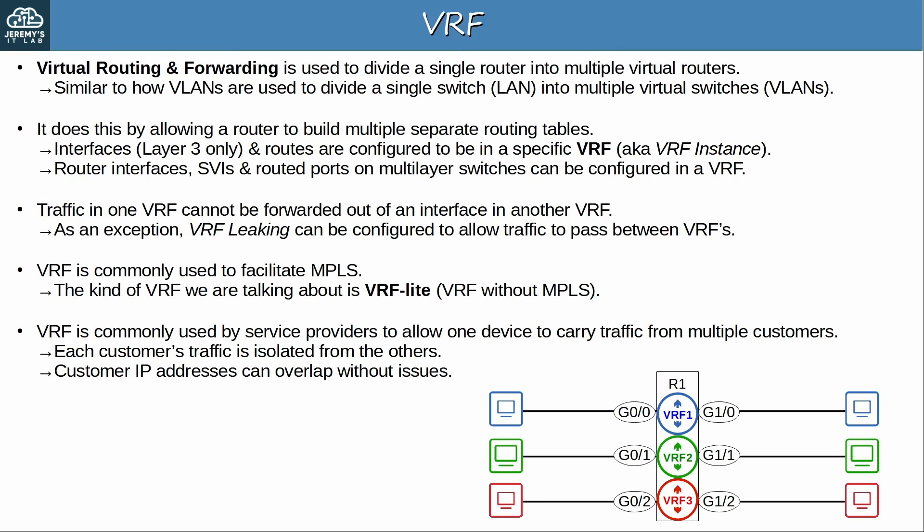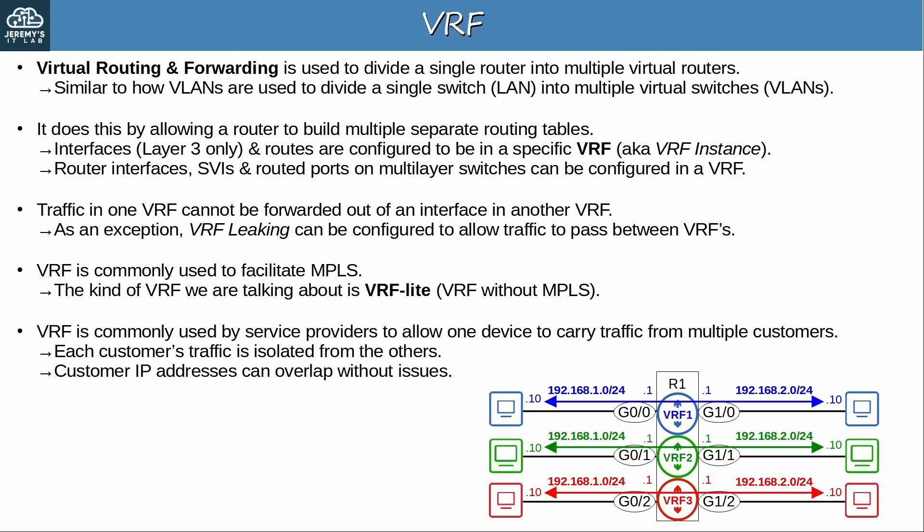Another major point is that customer IP addresses can overlap without issues. For example, the blue customer uses subnets 192.168.1.0/24 and 192.168.2.0/24. The green customer also uses 192.168.1.0/24 and 2.0/24, and so does the red customer. Without VRF, this kind of configuration is not possible on a router, but with VRF it works fine even though the IP addresses all overlap.